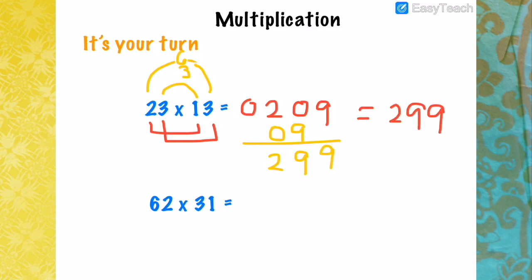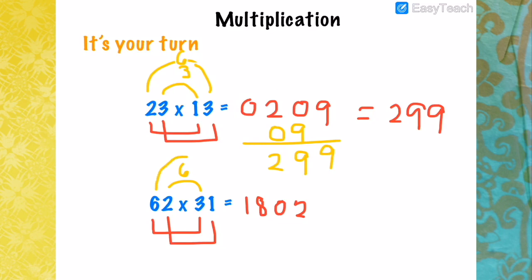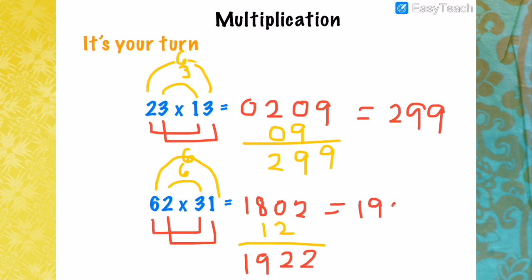Another example: 62 times 31. Multiply the tens place: 6 times 3 is 18. Multiply the ones place: 2 times 1 is 2. Multiply the inner value: 2 times 3 is 6. Multiply the outer value: 6 times 1 is 6. Add them: 6 plus 6 is 12. Then add the numbers: 18, 12, 2. That gives 1, 9, 2, 2. Therefore 62 times 31 is 1922.